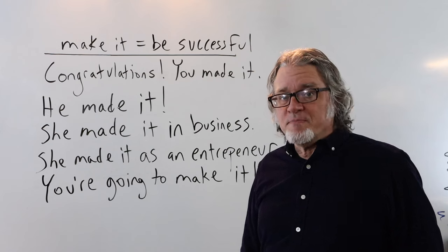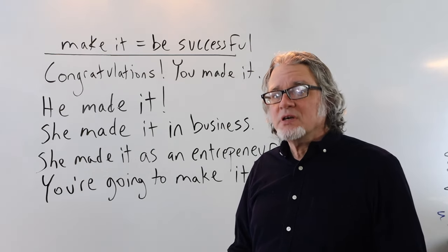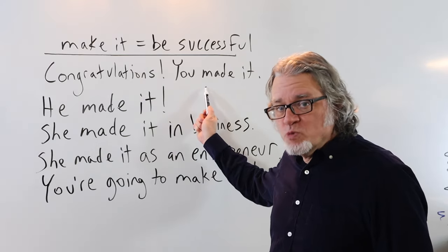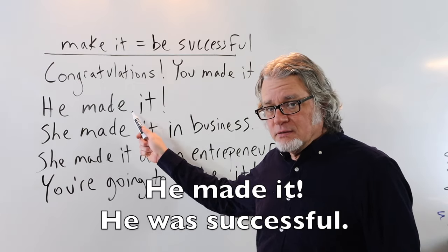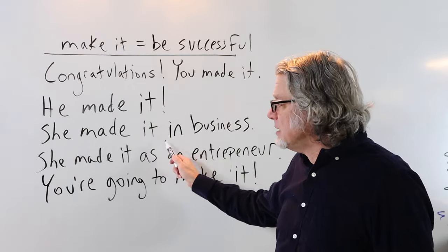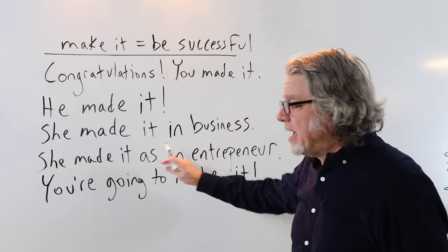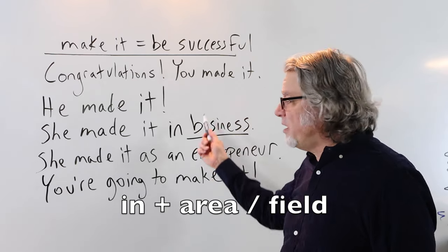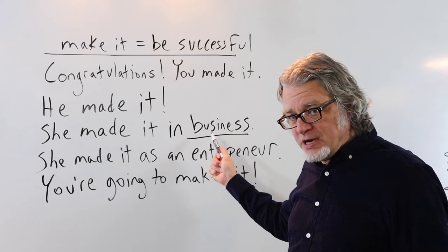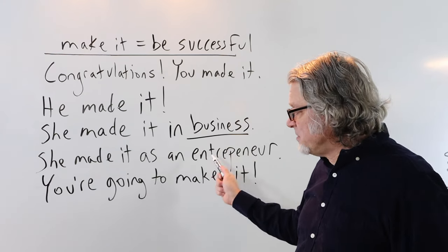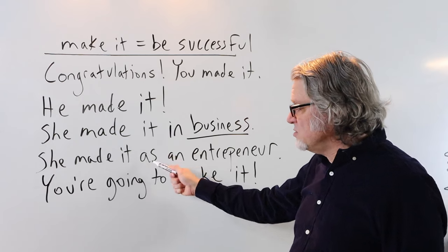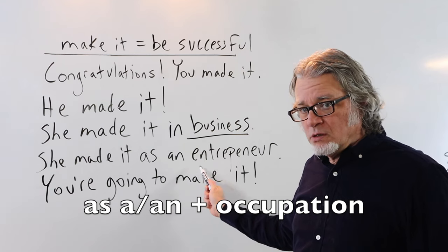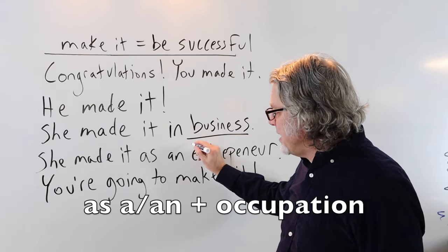Make it is very popular when talking about a person's success. Congratulations, you made it. He made it. He was successful. She made it in business. After the preposition in, then you have the area. You can put other fields of occupations here. Or when you refer to a specific occupation then you can use as and then the title. She made it as an entrepreneur. She made it as an actress.